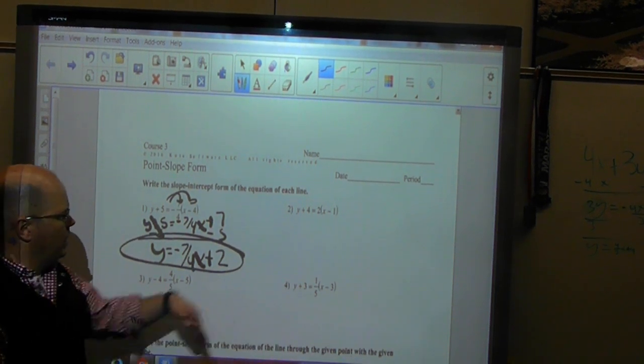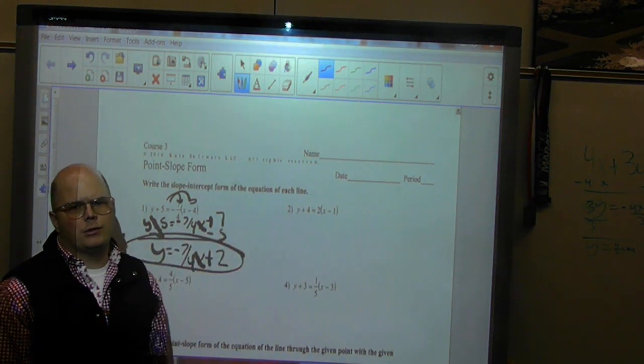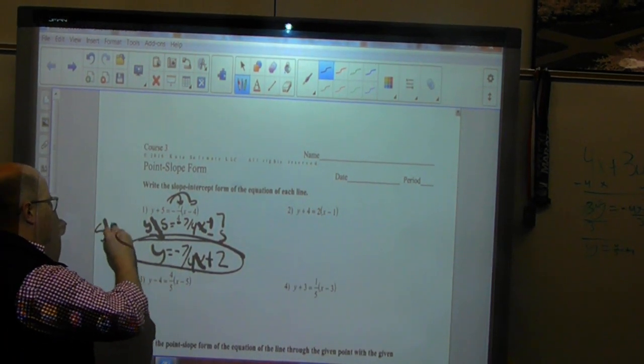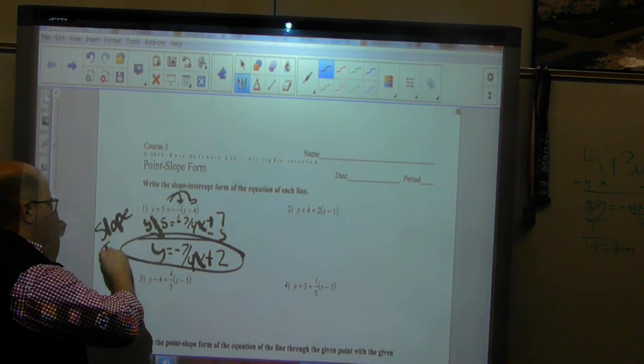So that's one way to do it. When they're written in this, this is already in point slope form, so we're just simplifying to our slope intercept form.